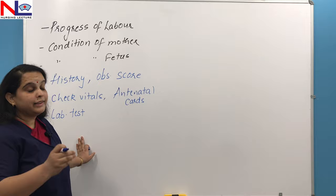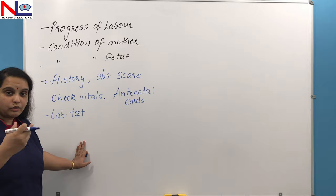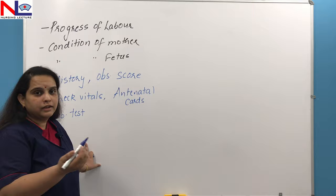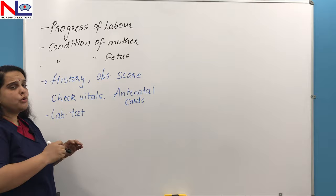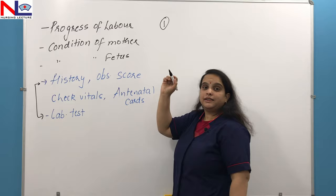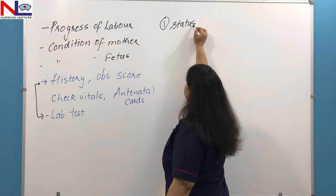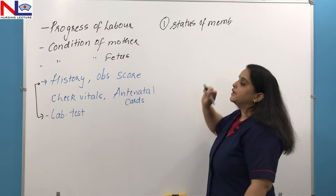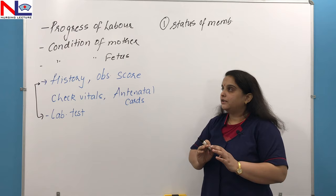All laboratory tests should be collected beforehand, including hematocrit values, hemoglobin, blood grouping, cross matching, and serological tests for HIV and hepatitis B — all these should be collected once she is admitted. After gathering this information, we proceed to initial management. First, we assess the status of the membranes. During the first stage of labour, the membranes normally remain intact.